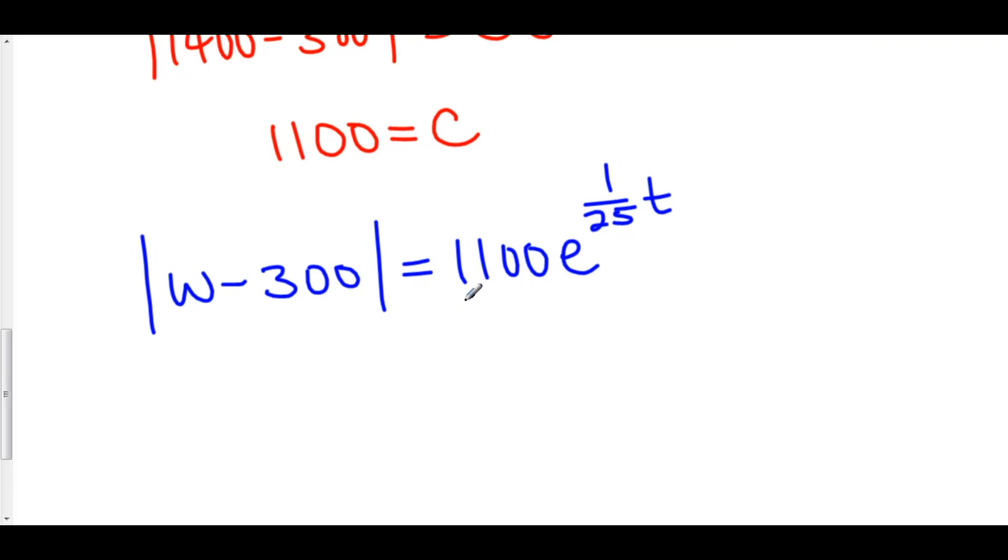The only thing that could have ever made this right hand side negative is our value of c. However, c is also positive, which means that these absolute value marks right here are completely redundant. We don't need them.